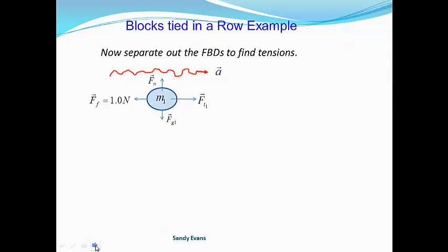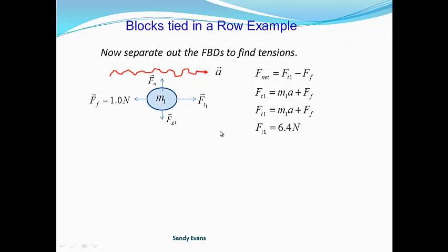Here's mass 1. Notice that it was at the back end, so there was only one piece of string attached to it. That is why we have FT1 here, and pulling back is just the force of friction. So the F-net statement looks like FT1 minus the force of friction. We isolate for FT1, plug in mass 1, and we get our tension in that string.